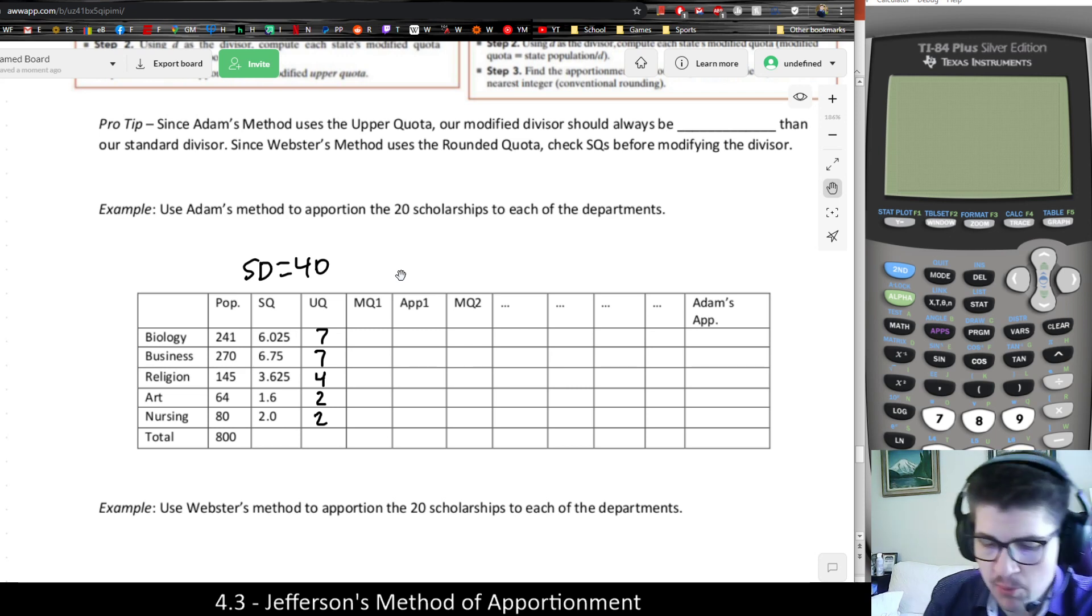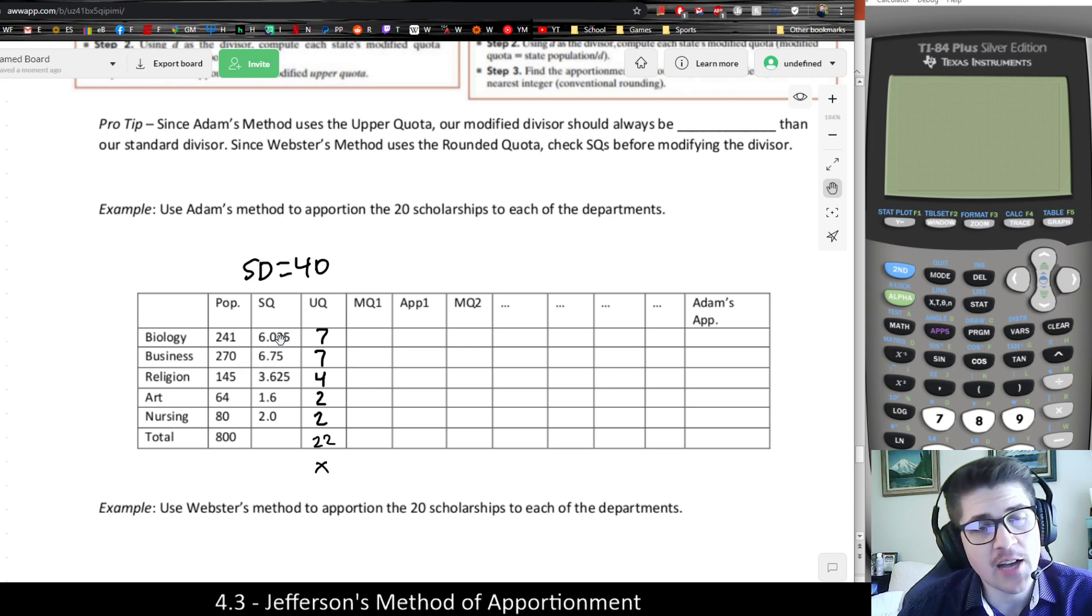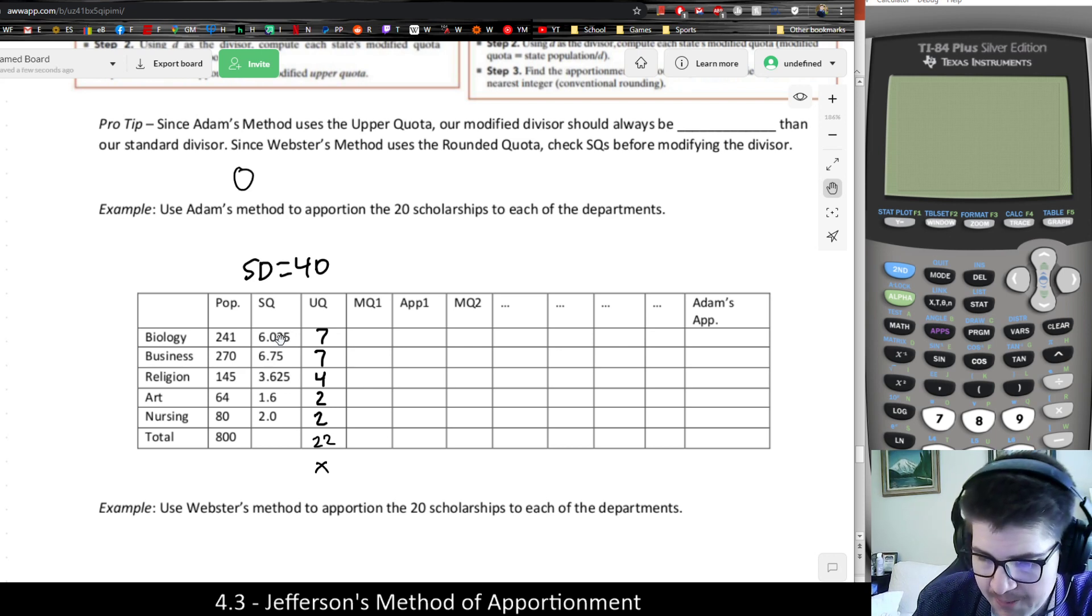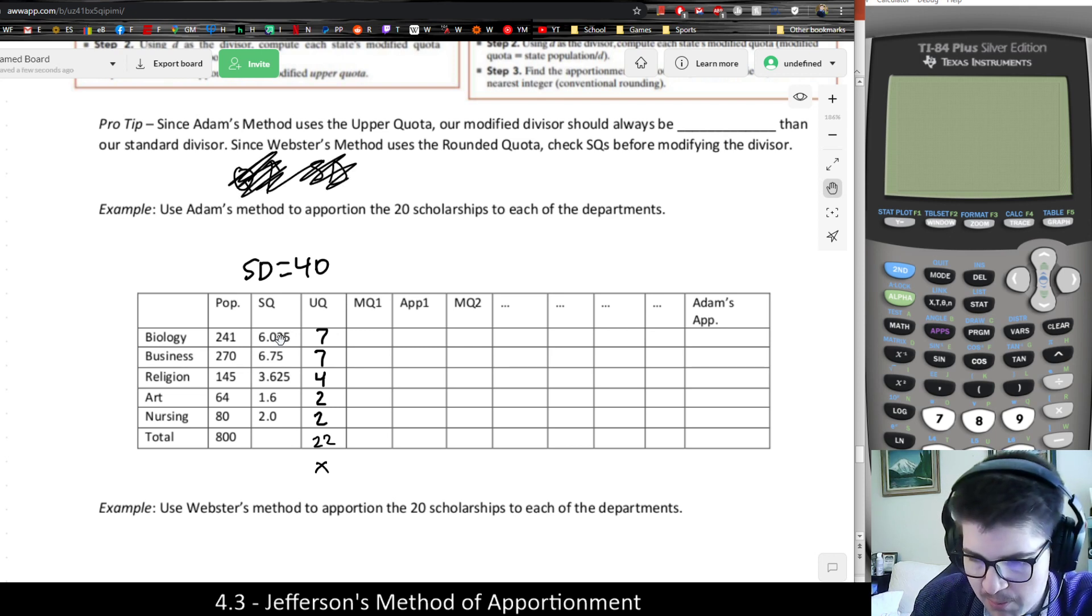We want to know, did that work? Obviously, if we're rounding them all up, it's not going to add up, right? Because that's going to be 14, 18, 20, 22. No good. So Adam's method, I'm going to need to find a new divisor. If the quota was too high, what I need to do is raise the standard divisor because I want to make sure the quotas go down.